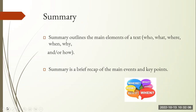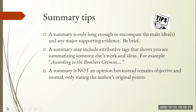So what is summary? Summary is going to tell you what the text is about. It's going to outline the main elements — who, what, when, where, why, and how. So you think of summary as a brief recap of the main events and the key points. You want to make sure your summary is long enough so that whoever is reading it understands the main idea, but you still want to be brief. A lot of times when you're writing summaries, you'll include attributive tags, like "according to Brothers Grimm," because you're summarizing someone else's work. But one thing to remember is that summary is not an opinion. Summary is very, very objective. You remain neutral. You're only stating the author's original points.